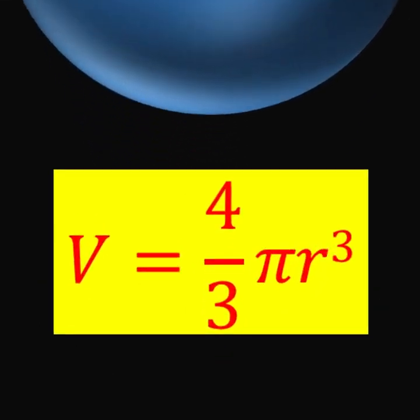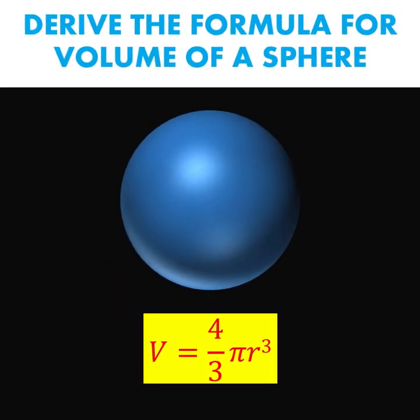This is a sphere and this is the formula to compute for the volume of this sphere. Do you know how to derive this formula? In this lesson, I'm going to show you how to derive this formula v equals 4 over 3 pi r cubed.